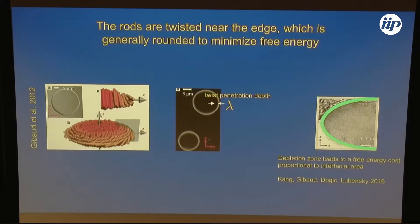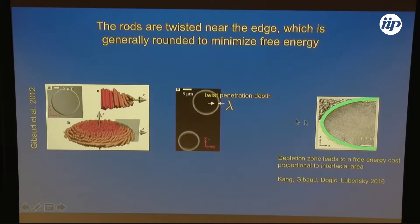Why do the rods twist? The rods are typically chiral, but not all the rods are chiral at high temperature. For example, they form a nematic phase that doesn't have twist, and even those rods will twist at the edge when they form these membranes. The reason is the depletion force.